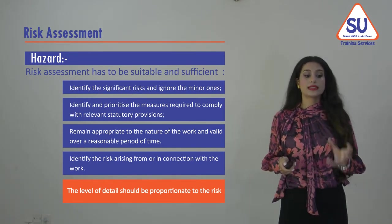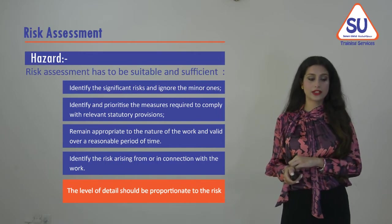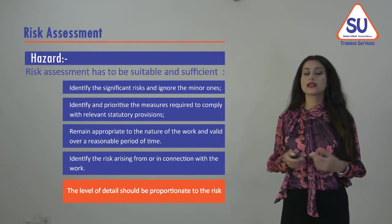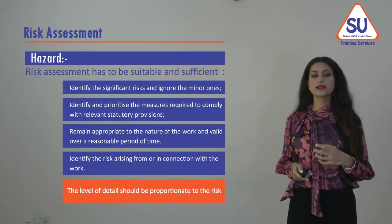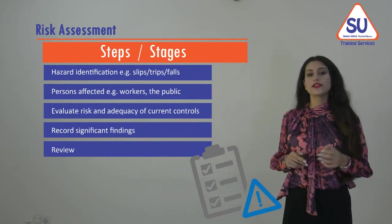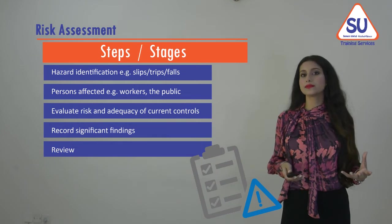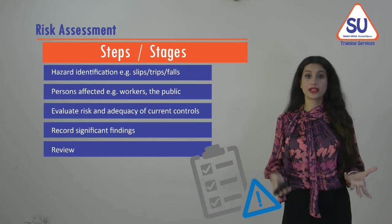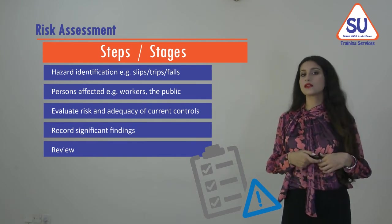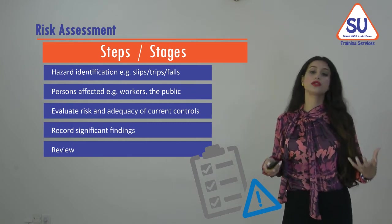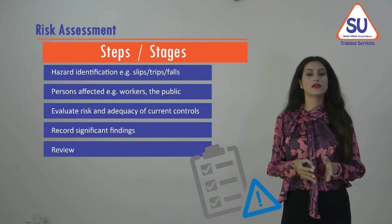We also need to identify risks arising from or in connection with the work. The level of detail should be proportionate to the risk — high risks naturally require more analysis and in-depth detail. The first stage of risk assessment is identifying hazards, such as slips, trips and falls, which will vary depending on the type, activities, and size of the organization. The next step is identifying persons affected — workers, the public, visitors, contractors — taking into account any person or entity affected by our activities.